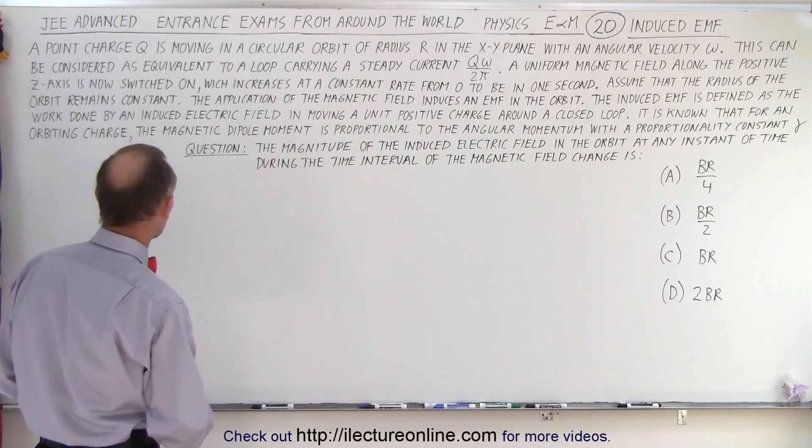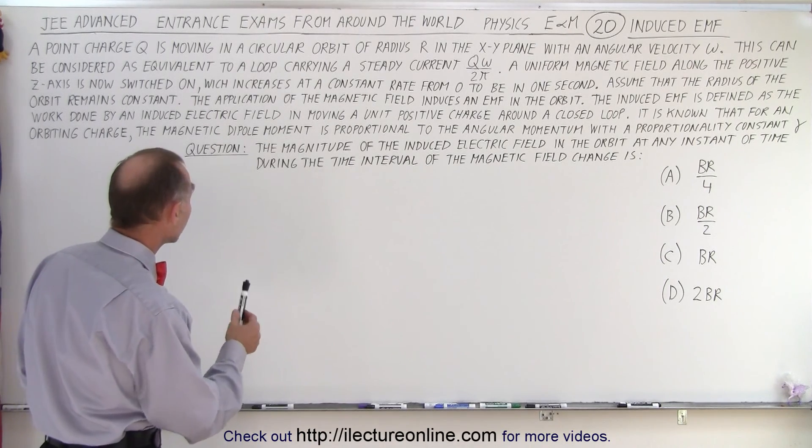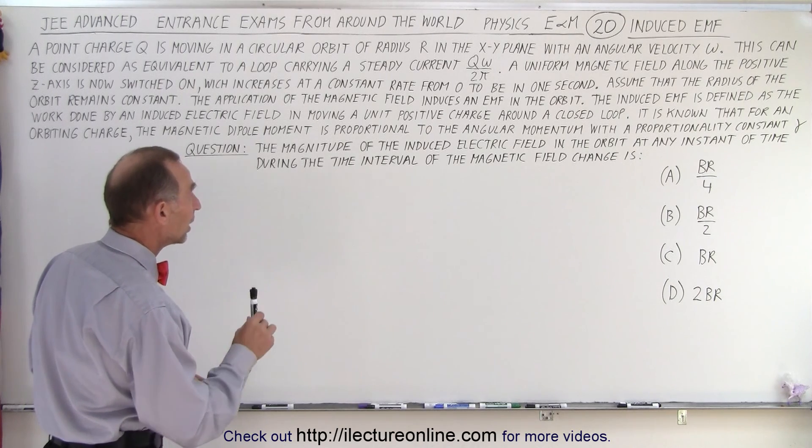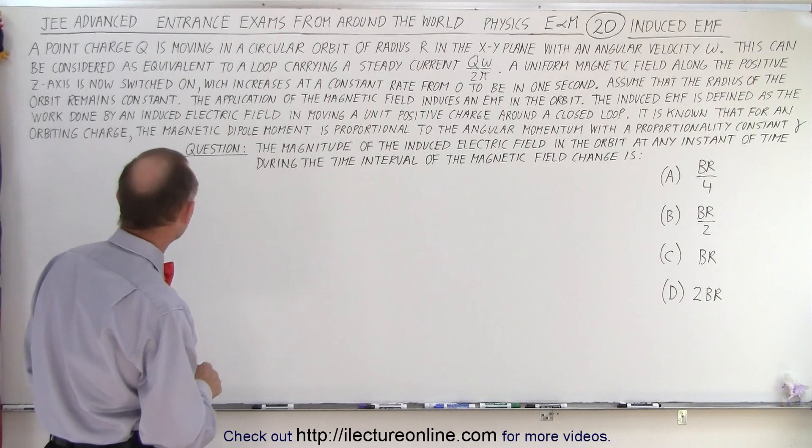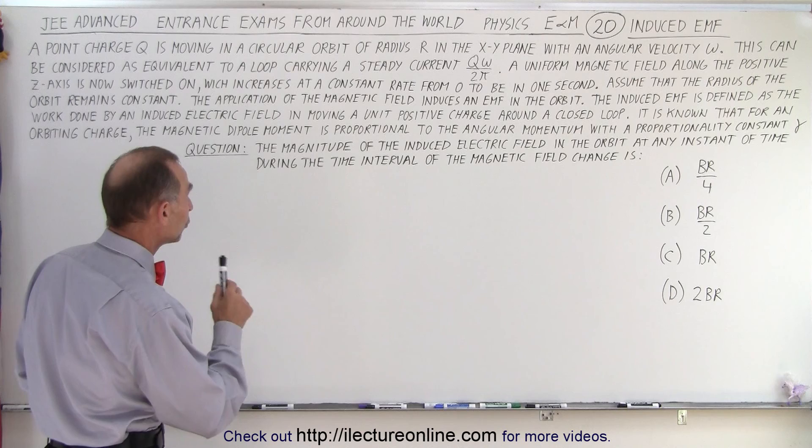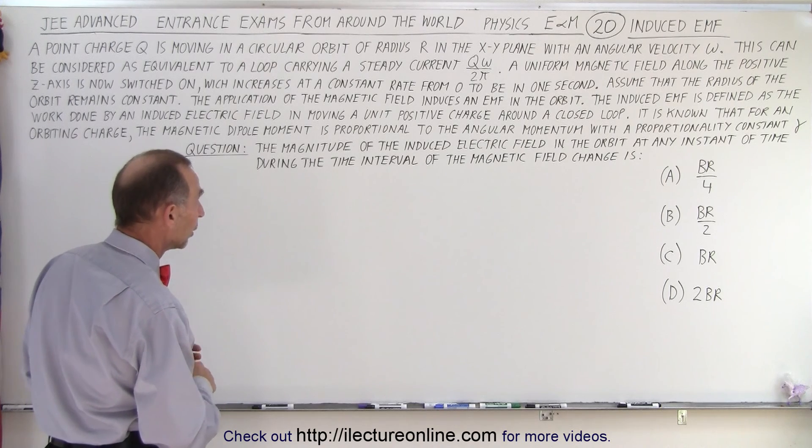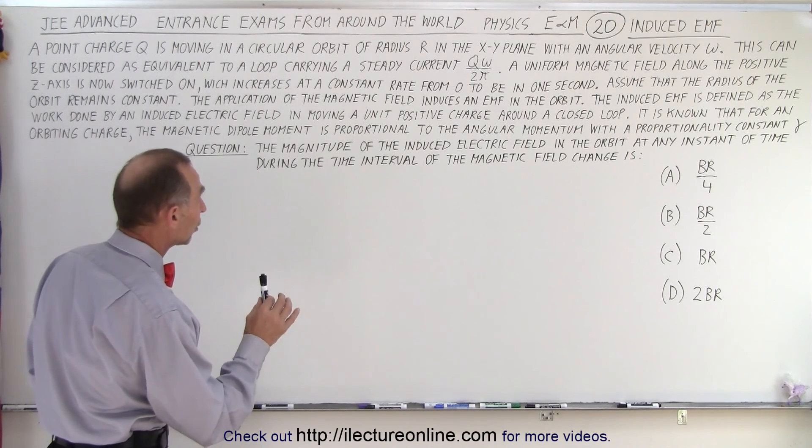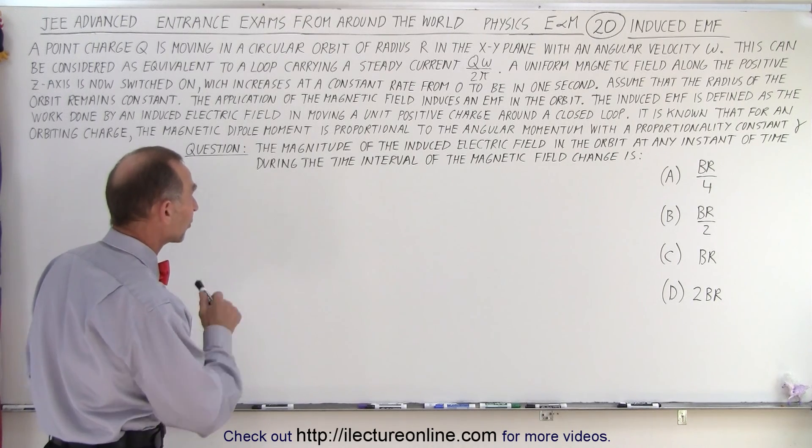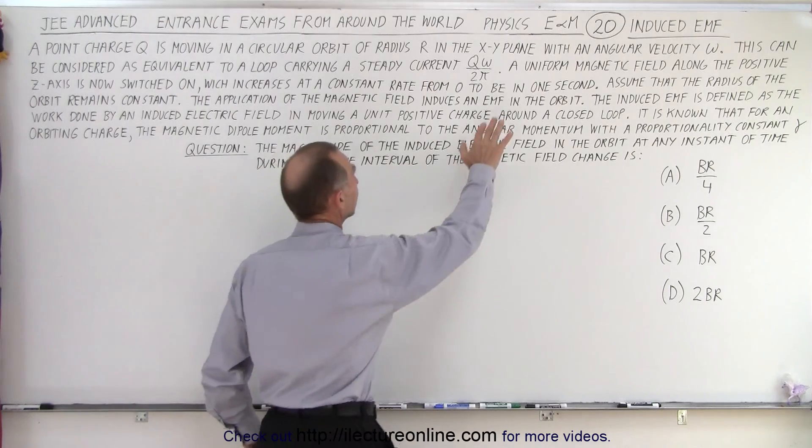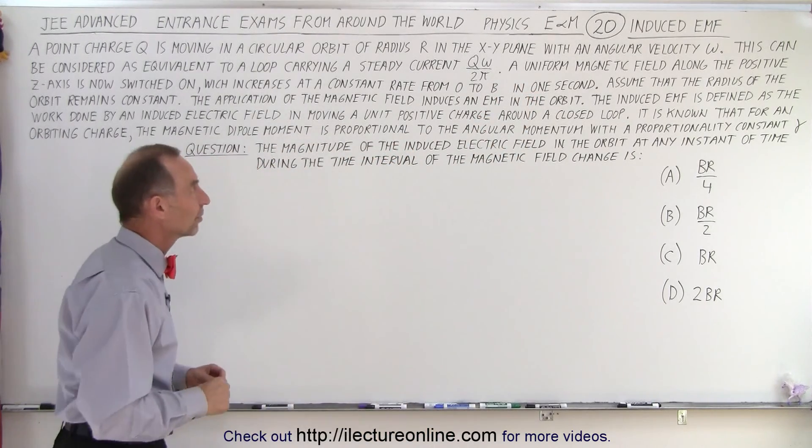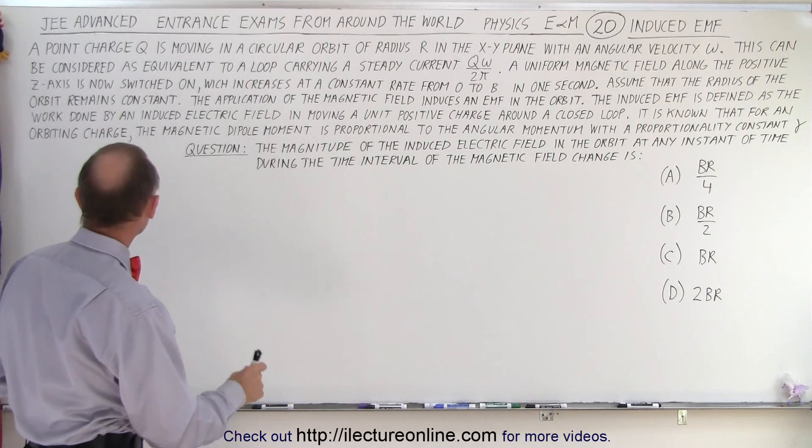They give you all this text. They say a point charge q is moving in a circular orbit of radius r in the xy plane with an angular velocity omega. This can be considered as equivalent to a loop carrying a steady current qω over 2π. A uniform magnetic field along the positive z axis is now switched on which increases at a constant rate from zero to B magnetic field strength in one second.